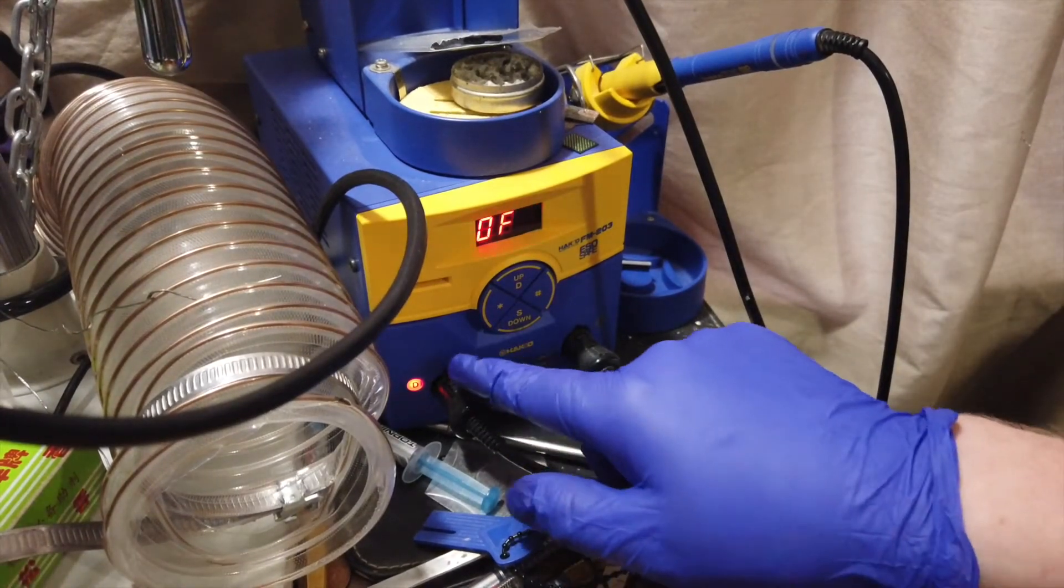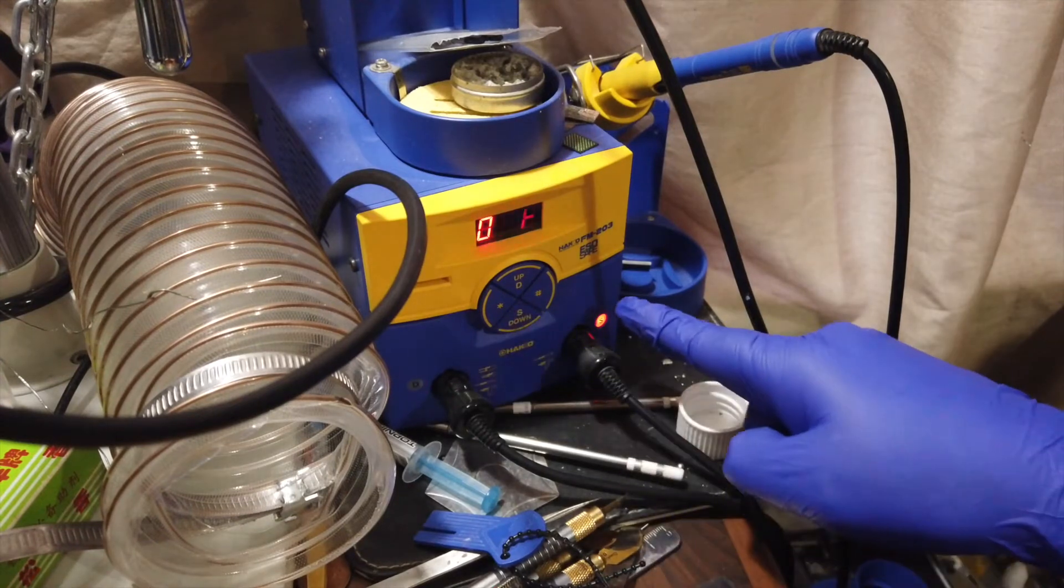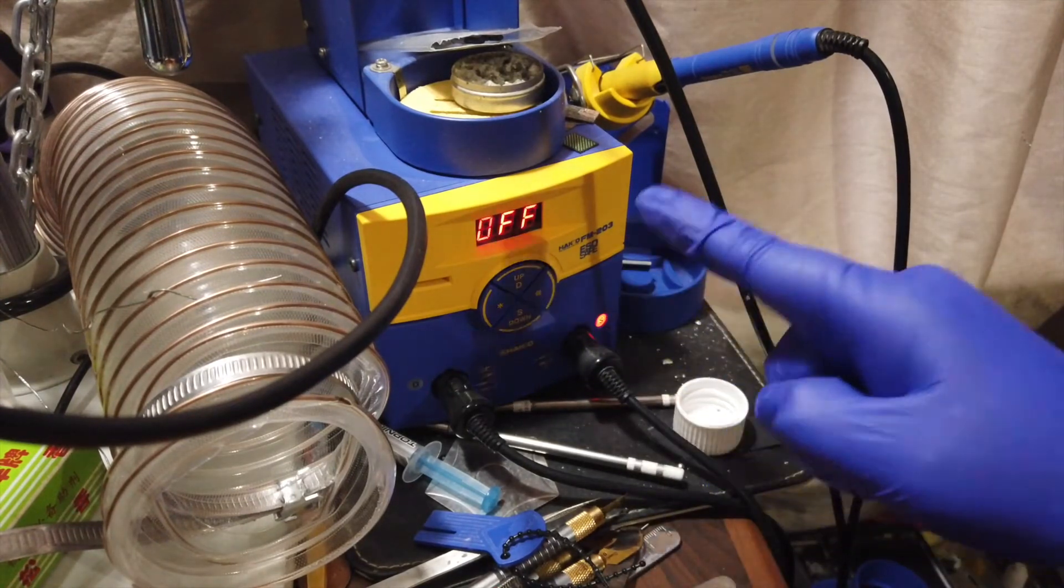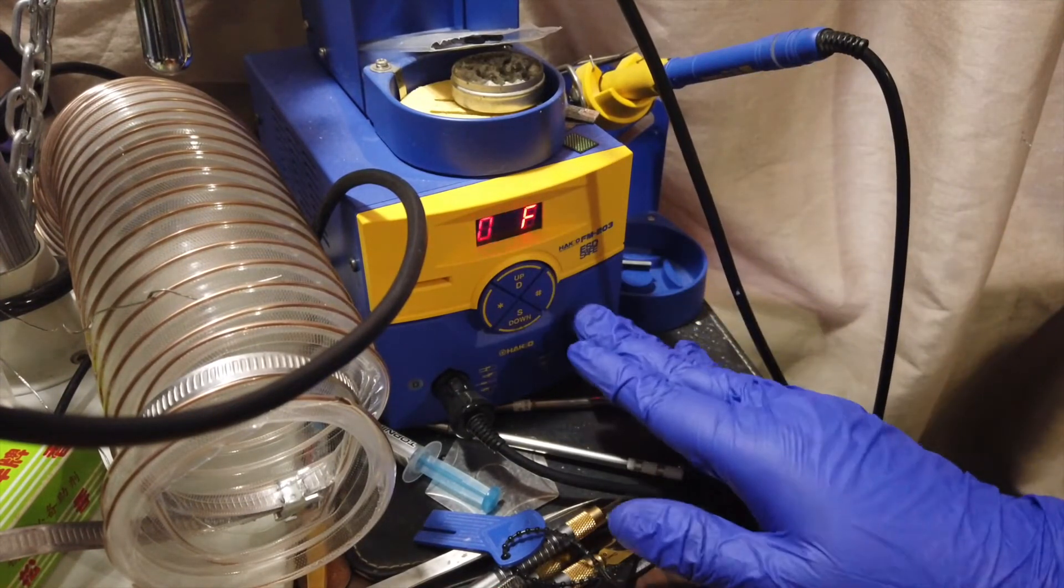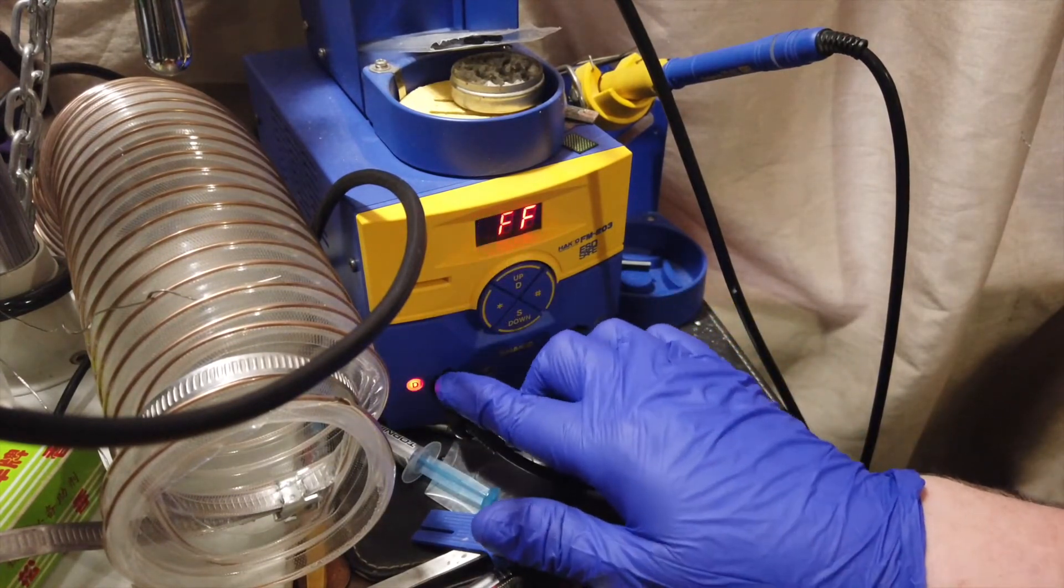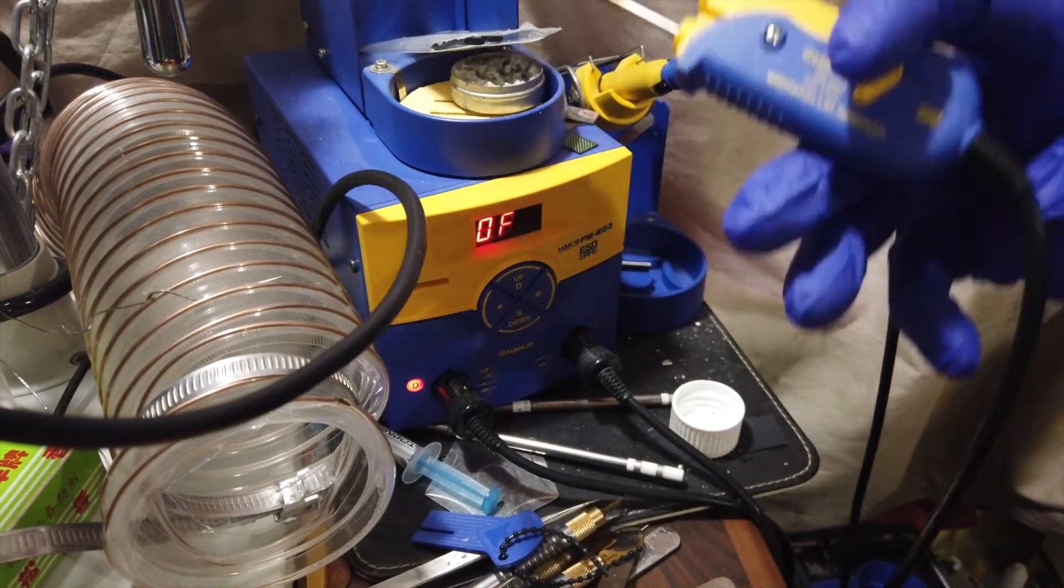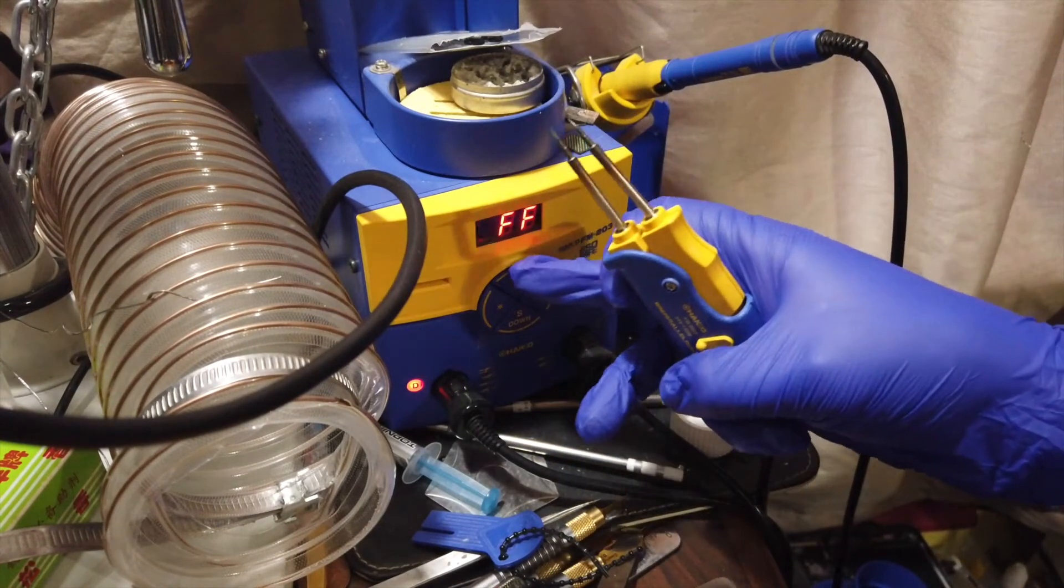Right. This is how you go about setting it. First things first, you need to make sure you're not on channel F. Because you do not want to change the offset temperature on this channel. You want to make sure you're on channel D, which would be your hot tweezers. Because that's the only channel hot tweezers can run on anyway.